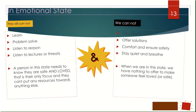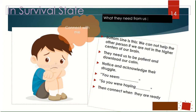In survival state, the bottom line is this: we cannot help the other person if we are not in the higher centers of our brain. They need us — we are the grownups, we are the ones in charge. They need us to be patient and download our calm, which means we need to stay calm. We need to notice and acknowledge their struggle: 'You seem upset, what's going on?' Or if I know a child didn't get to be line leader, I'm going to breathe and say, 'So you were hoping you got to be the line leader, but it's somebody else's turn. That's hard. You can handle this.' Then give them some connection when they're ready for it.